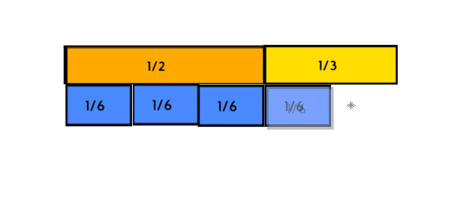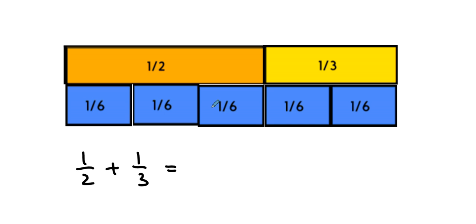We decide to use sixths because one-half is three-sixths and one-third is two-sixths. So now we have something that we can use. We can say that one-half plus one-third is the same as three-sixths plus two-sixths, and that's one, two, three, four, five-sixths.